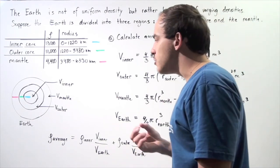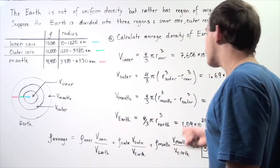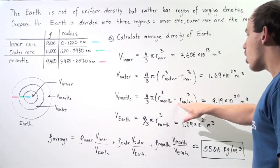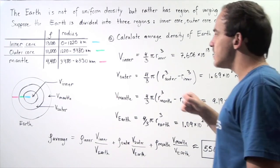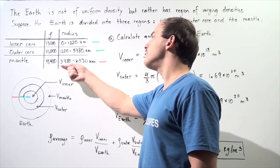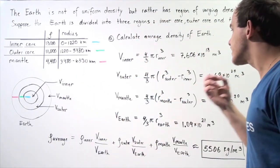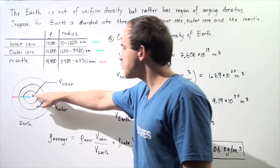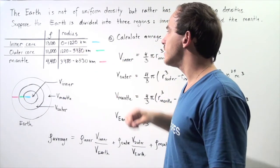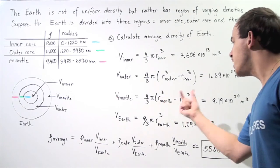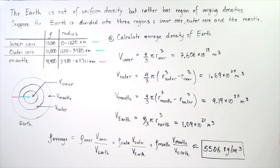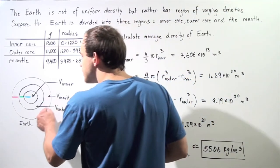To find the volume of the mantle, we follow the same procedure. We take the difference of the radii cubed — r mantle cubed minus r outer cubed — where r mantle is 6,380 kilometers multiplied by 1,000 to convert to meters, and the radius of the outer region is 3,480 kilometers multiplied by 1,000. We cube those values, take the difference, multiply by four-thirds pi, and we get a volume of 9.19 times 10 to the 20 meters cubed for the mantle region.